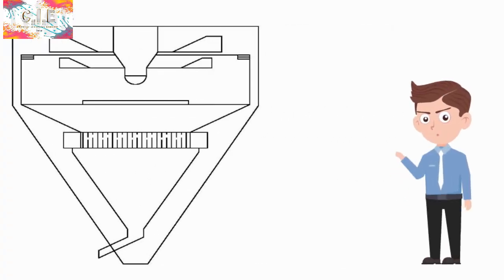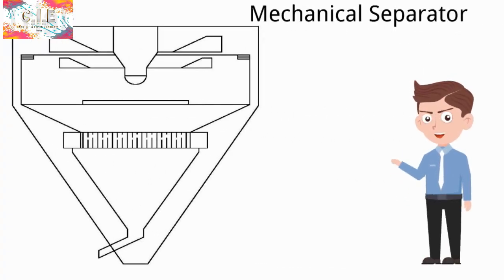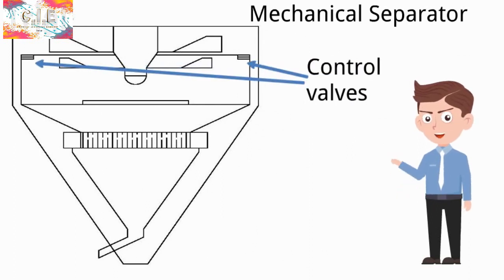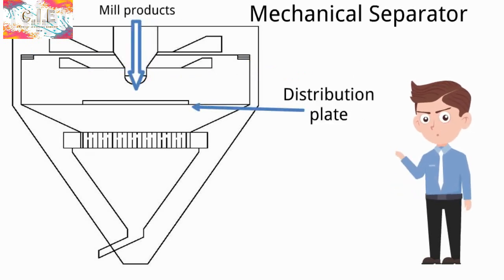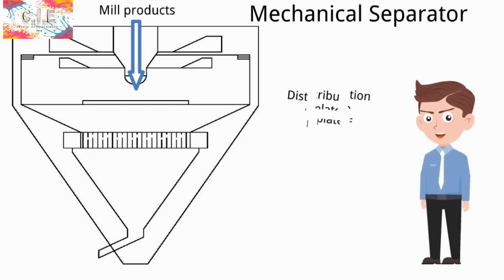The second kind is mechanical separator. This kind has double cone with control valve to control the discharge from inner to outer cones. The material is fed directly to the inner cone on the distribution plate and diffused by centrifugal force of the distribution plate.